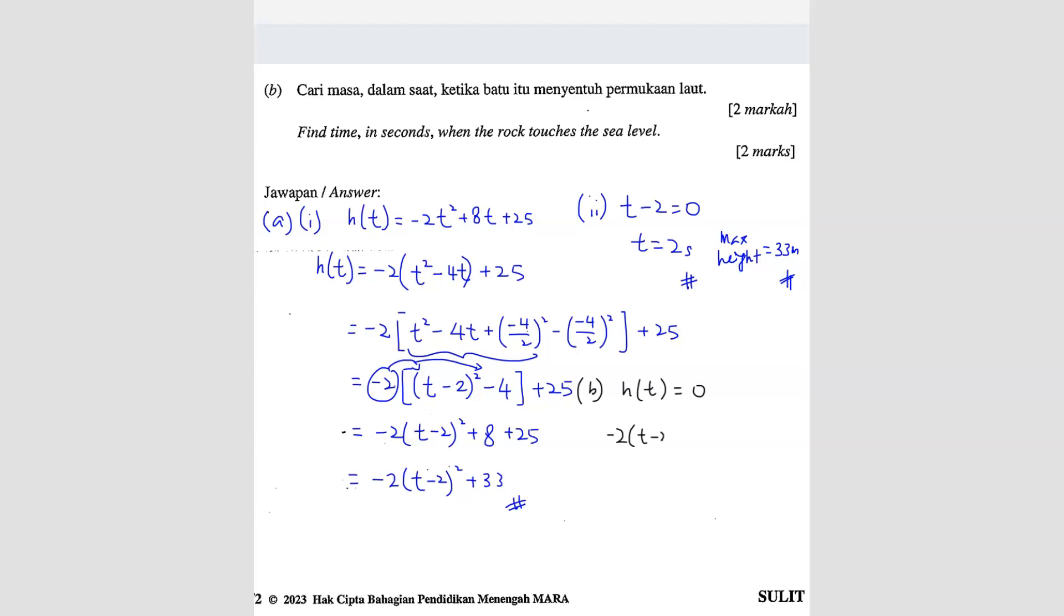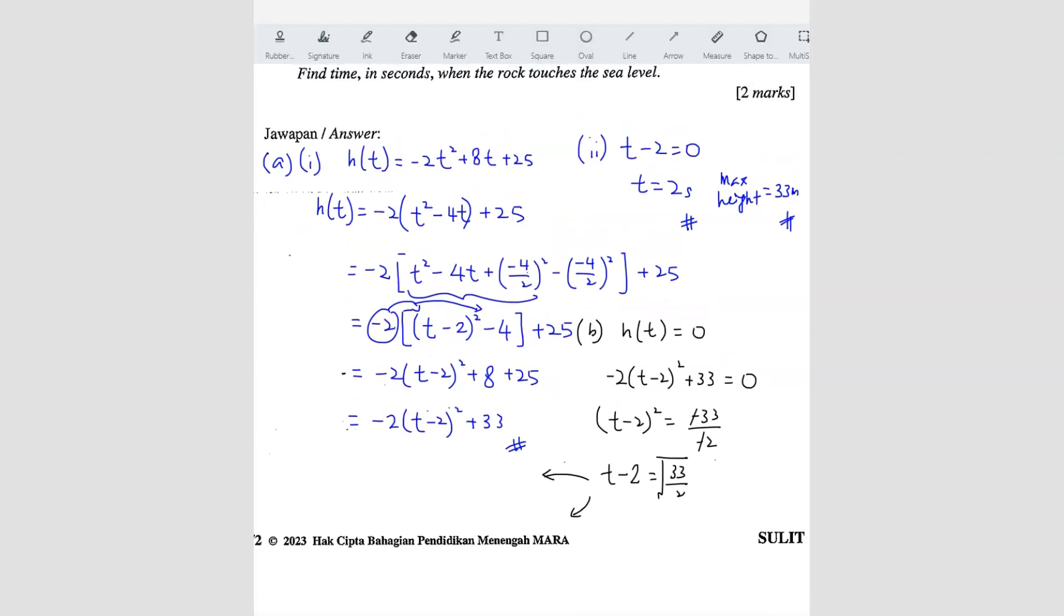So we use back the same equation here. So we get negative 2 t minus 2 square plus 33 equals to zero. So we get t minus 2 square equals to negative 33 divided by negative 2. So t minus 2 equals to square root 33 over 2. You have to, there are two answers, because first one is positive, second one is negative. So the first one here we get is t equals to square root 33 over 2 plus 2. The second answer you get is t equals to negative 33 over 2 plus 2.